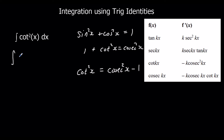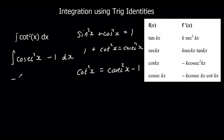So I'm going to integrate cosec squared x minus 1 with respect to x. Cosec squared x integrates to negative cot x — because negative cosec squared x integrates to cot x, so cosec squared x integrates to negative cot x. Negative 1 integrated is negative x, giving negative cot x minus x plus c.